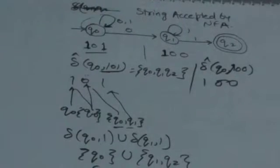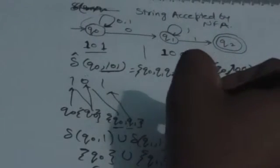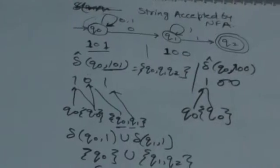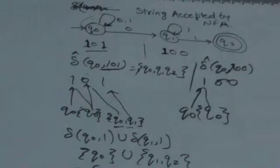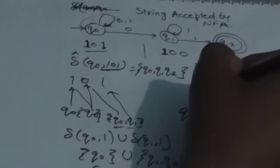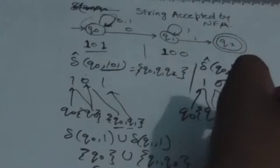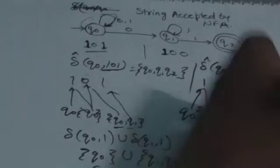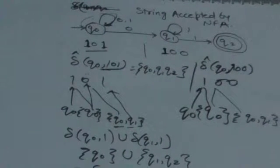We have to check the output — if it contains at least one final state then 100 would be accepted by the NFA. First, find the transition for 1: when reading 1 in state Q0 it remains in Q0. Then from Q0 it reads the second symbol 0, and the output is the set {Q0, Q1}.